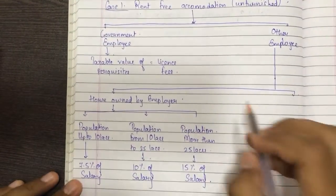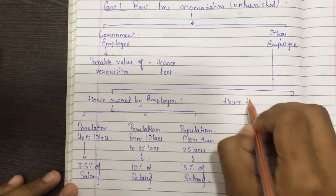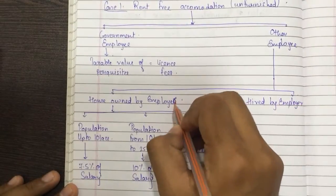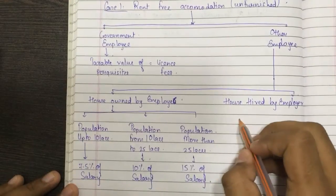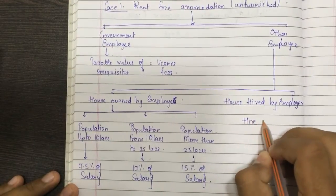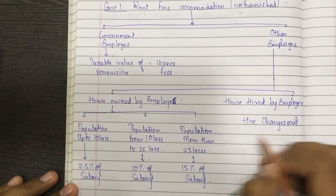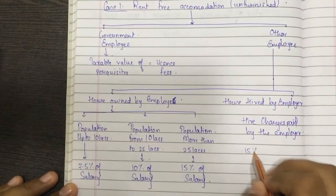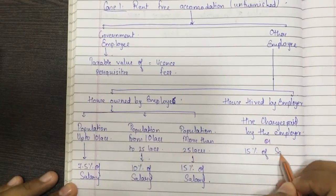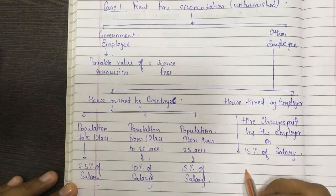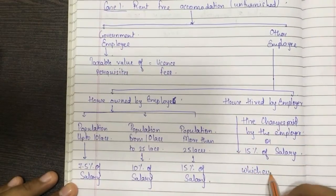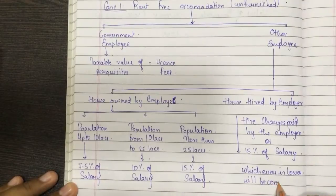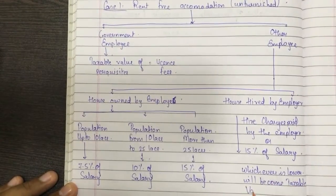This is clear for house owned by the employer. Now we'll see house hired by the employer. When the house is hired by the employer, the hiring charges paid by the employer or 15% of salary, whichever is lower, will become the taxable value of perquisites.